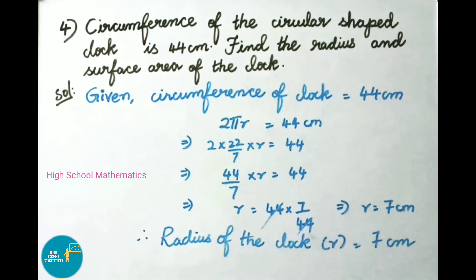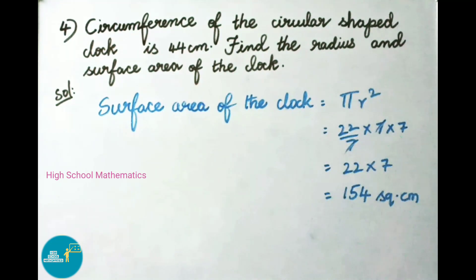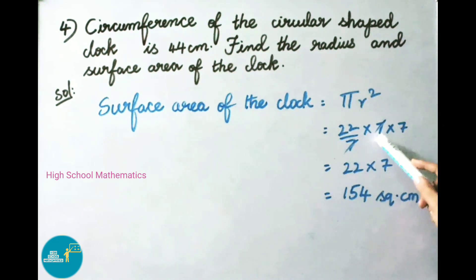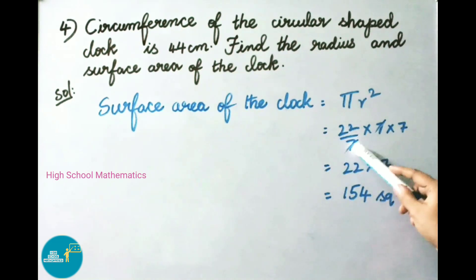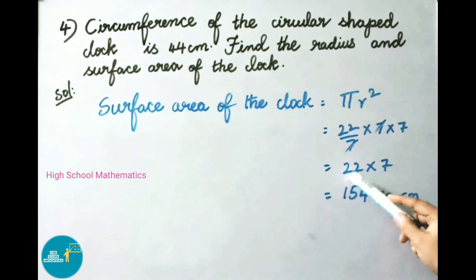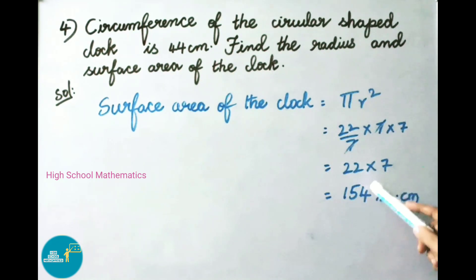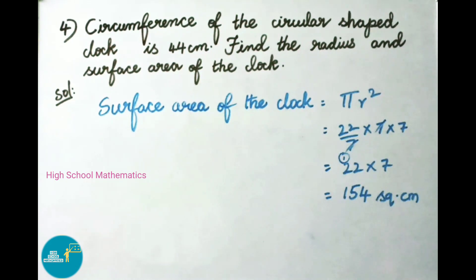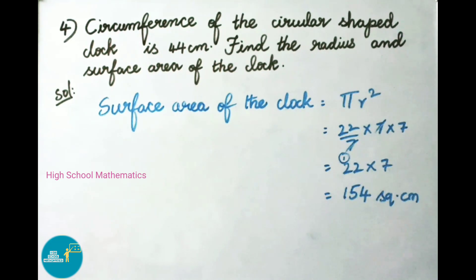Now we have to find the surface area of the clock. Surface area of the clock equals pi R squared, that is 22 by 7 into 7 squared, meaning 7 into 7. The 7s cancel. Now we multiply 22 into 7: 7 twos are 14, 4 carry 1; 7 twos are 14 plus 1 is 15. Therefore, 22 into 7 is 154. Therefore, the surface area of the clock is 154 square centimeters.